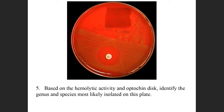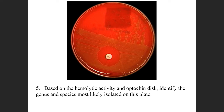So again, blood agar. What type of hemolytic activity are you seeing? Alpha — very good. Sensitive or resistant to the P-disc? What is on the P-disc specifically? Optochin — correct. So if you have an organism that is gram-positive coccus, catalase negative, alpha hemolytic, and sensitive to the P-disc, what's the genus and species? Streptococcus pneumoniae — very good.